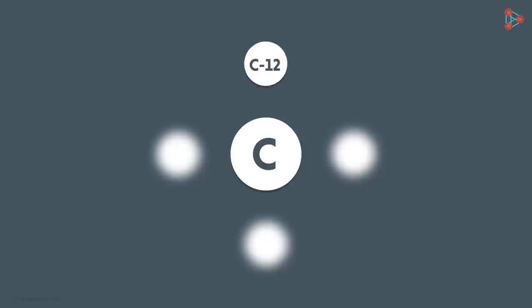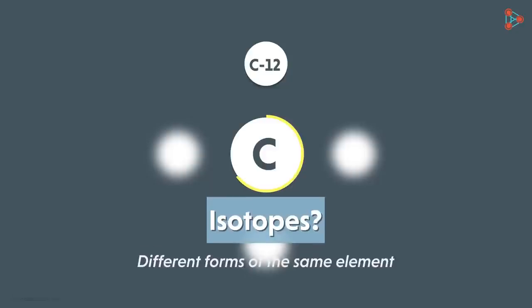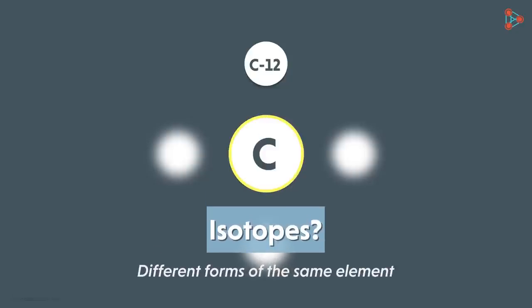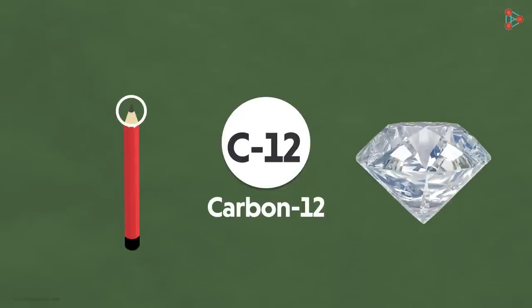The element carbon has many isotopes and carbon 12 is one among them. And do we know what isotopes are? Well for now, we need to understand that they are different forms of the same element. So in the case of carbon, we will have slight differences in the atoms which is what makes them isotopes. So carbon 12 is one such isotope which is found almost everywhere in nature.